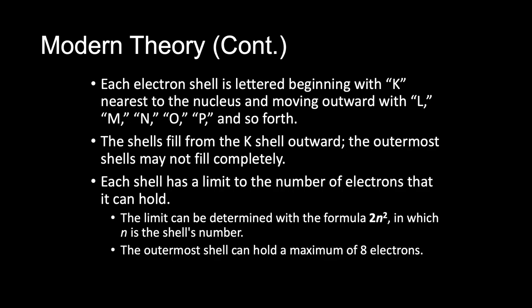Each electron shell of an atom is lettered beginning with K, nearest to the nucleus, and then moving outward with L, M, N, O, P, and so on. Generally, these shells fill from the K shell outward, with the outermost shells not necessarily filling completely, depending on the stability and nature of the atom.